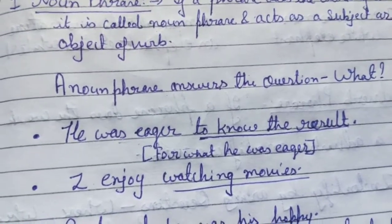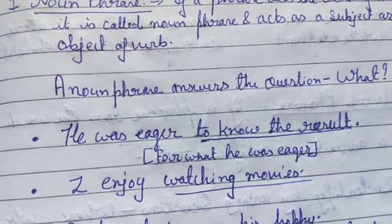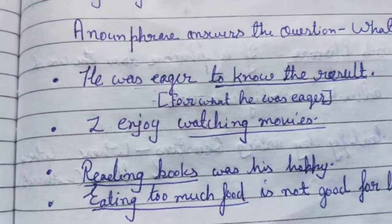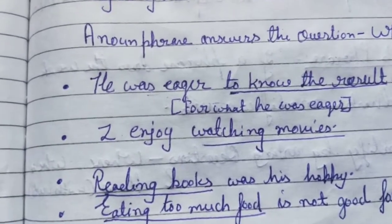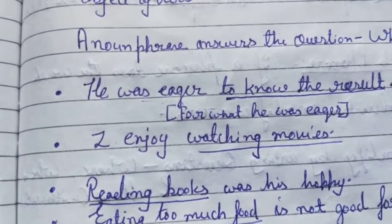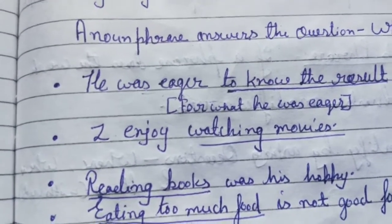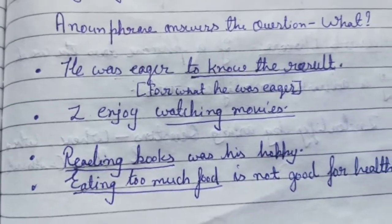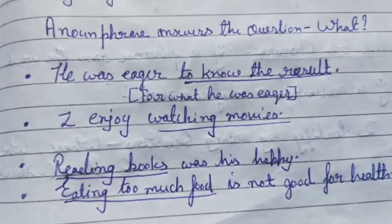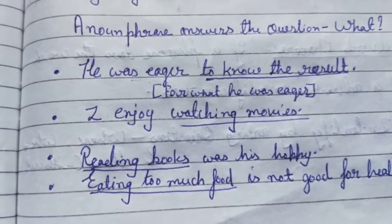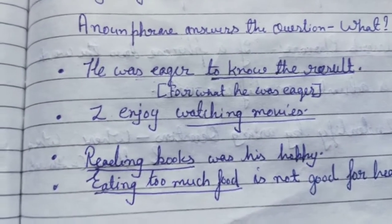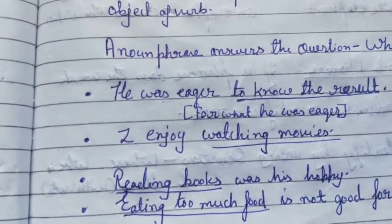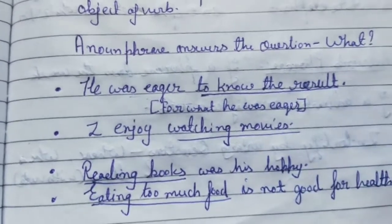Next sentence: 'Reading books was his hobby.' If we ask 'what was his hobby?' we get the answer 'reading books' — so 'reading books' is a noun phrase. Similarly, 'Eating too much food is not good for health' — if we ask 'what is not good for health?' the answer is 'eating too much food.' Here 'reading books' and 'eating too much food' are noun phrases that do the work of a subject for the verb.